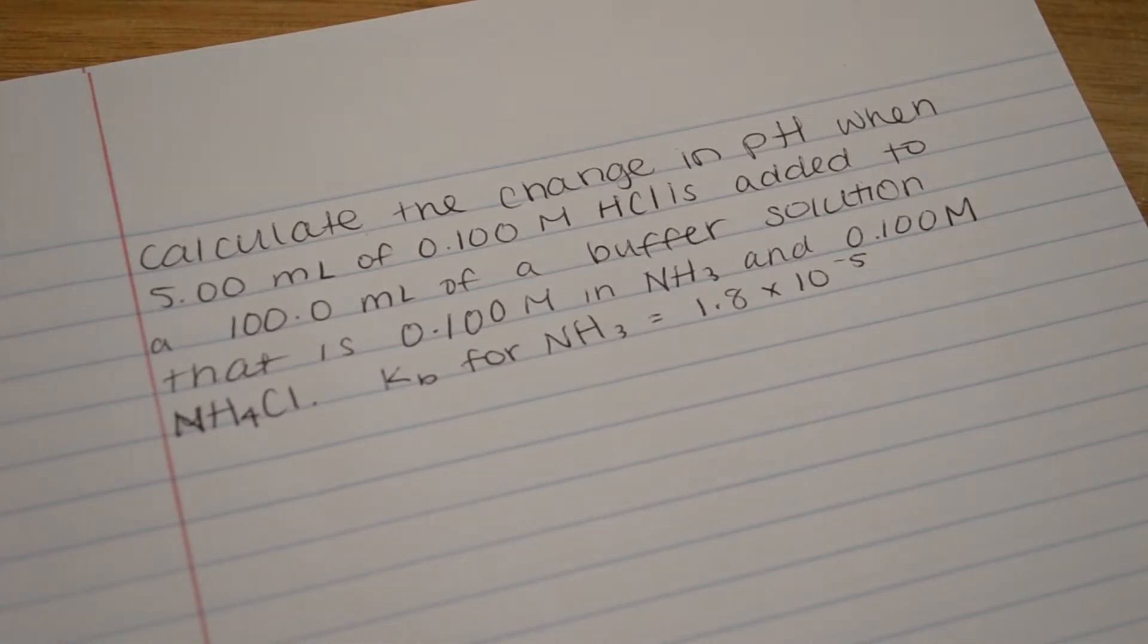In this video, I'm going to show you how to calculate the change in pH when 5 milliliters of 0.1 molar HCl is added to 100 milliliters of a buffer solution that is 0.1 molar of NH3 and 0.1 molar of NH4Cl. The KB for NH3 equals 1.8 times 10 to the negative 5th.